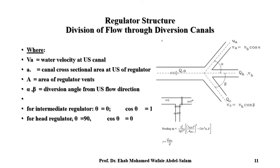For division of flow through divergent canals, the total discharge Q is divided into parts depending on the heading-up for every branch. There are equations shown in the graphics for this calculation.